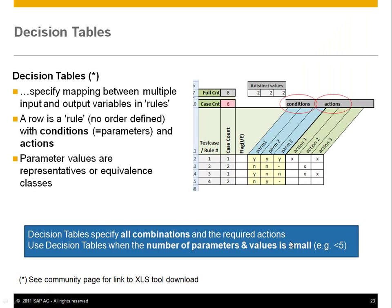What's a decision table? It's a table that maps multiple input and output variables in so-called rules. If you look at the graphic on the right, it's a screenshot from a tool. You see here in blue: parameters and actions — blue and green — parameters and actions are columns, and here you see values. This means, if you look at test case number one: if parameter one is yes, two is yes, three is yes, then you want action one and action three to happen.